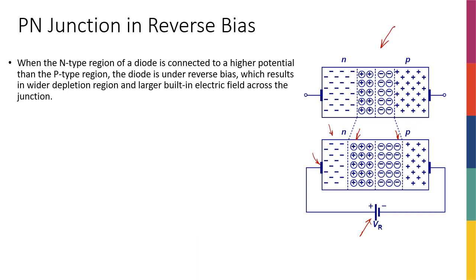So comparing reverse bias, a diode in reverse bias and a diode in equilibrium, we pretty much have the same situation. There's no current happening. There's not much happening inside our diode, except that the depletion region is widened.